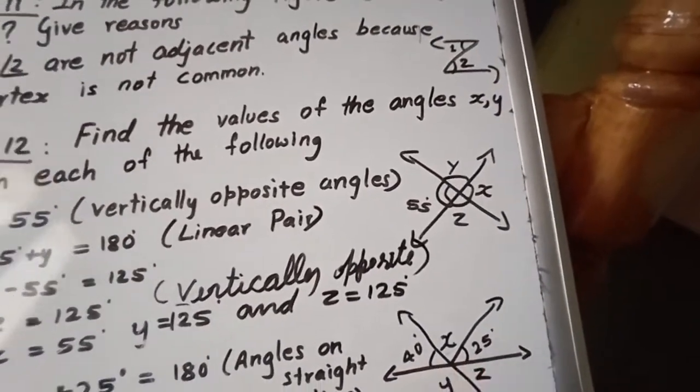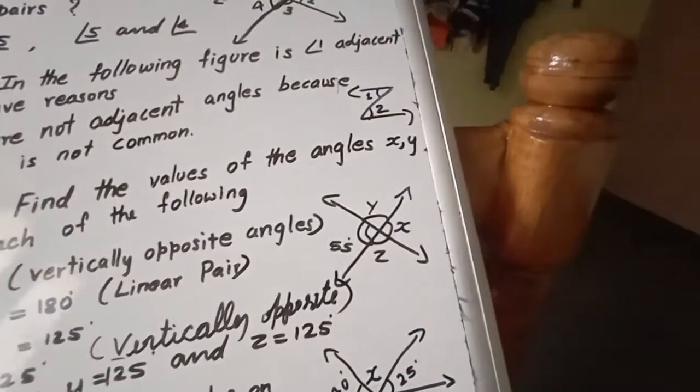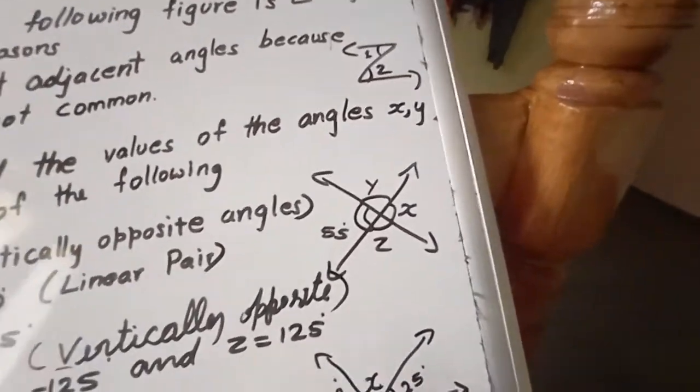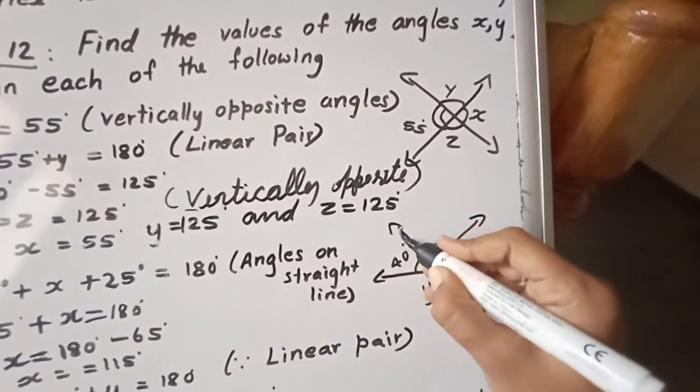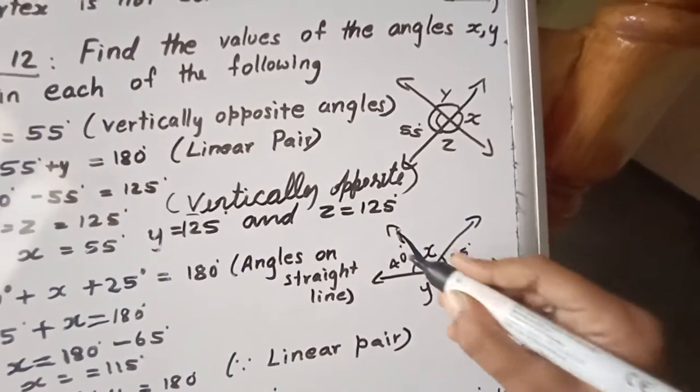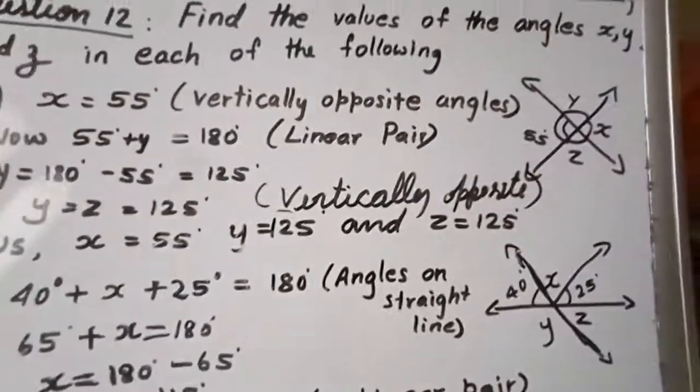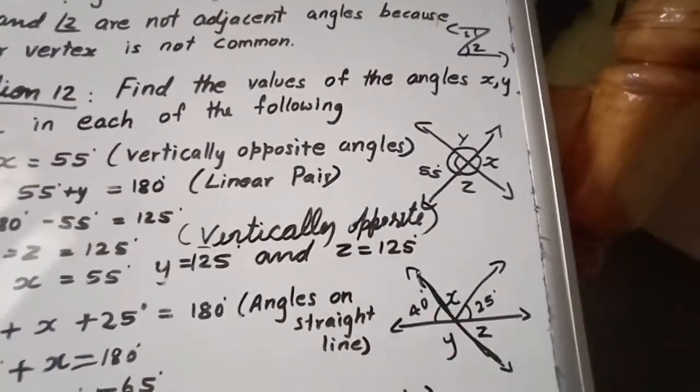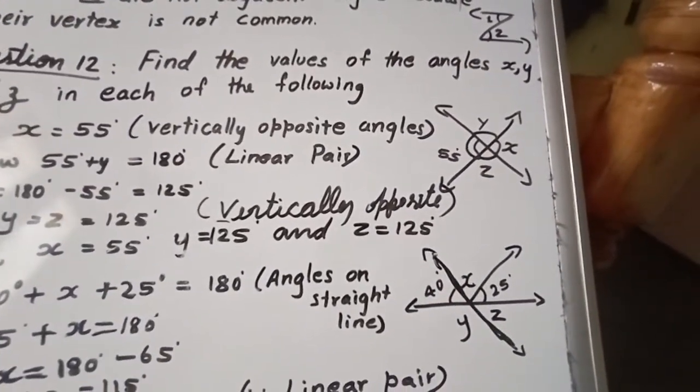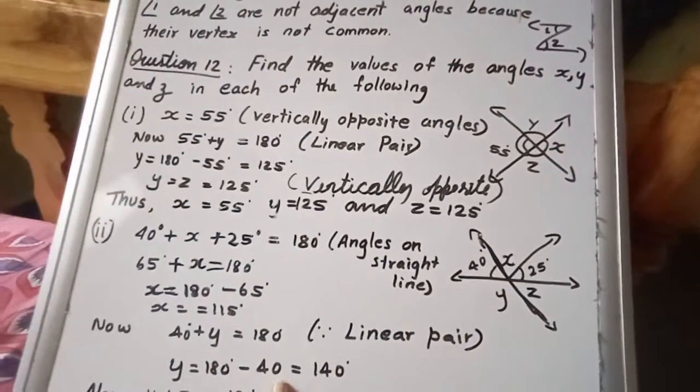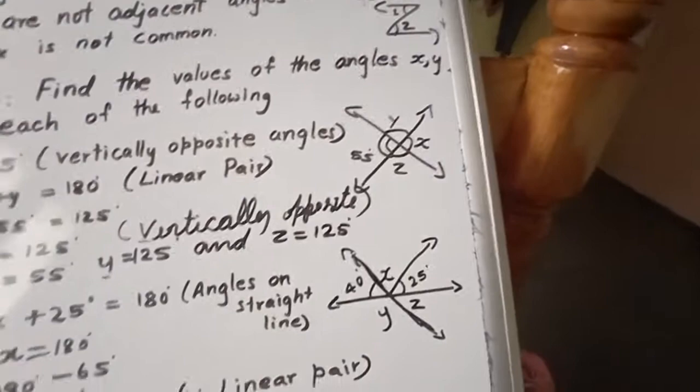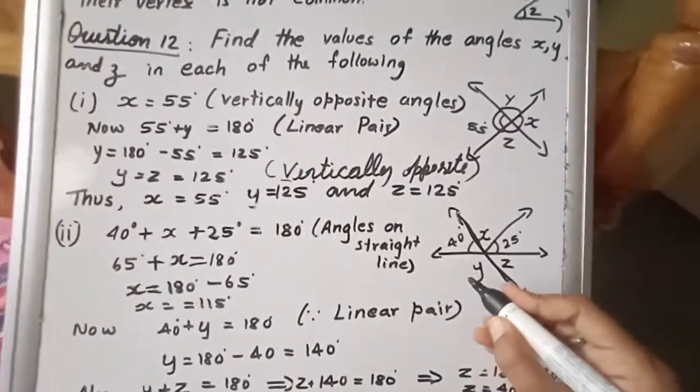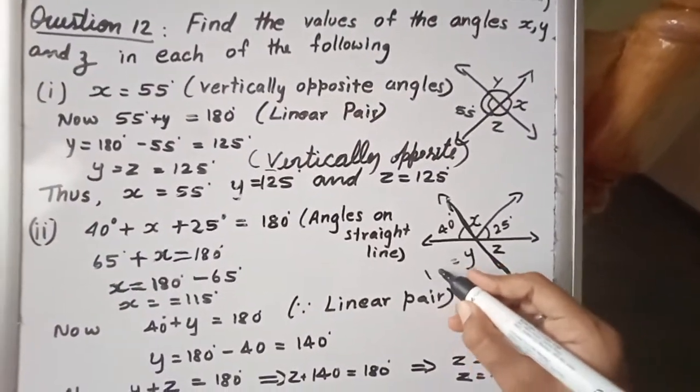Now once we got X is equal to 115, now let us go for this one. This is one of the straight line. You can see that this is one of the straight line. So 40 plus Y, let us take 40 plus Y, it is one of the linear pair. So Y is equal to 180 minus 40 will get 140. So Y is equal to 140 degree.